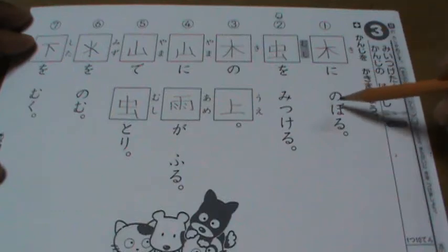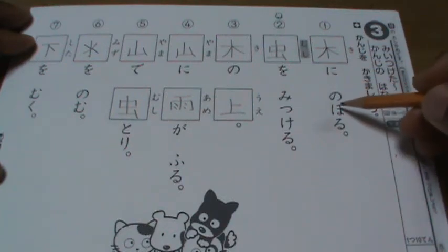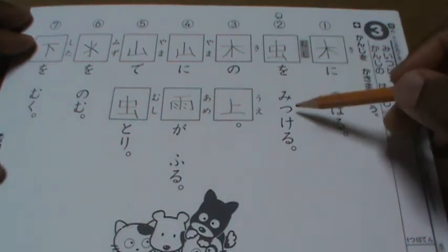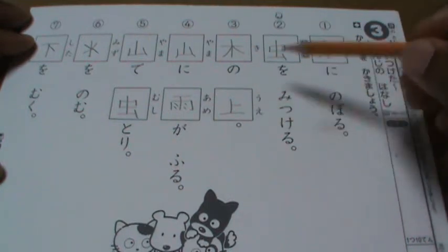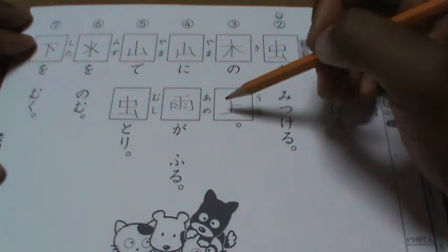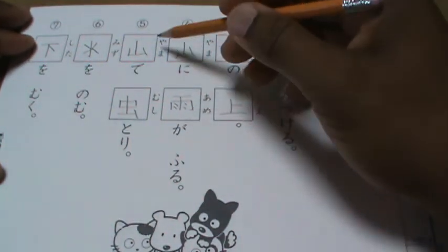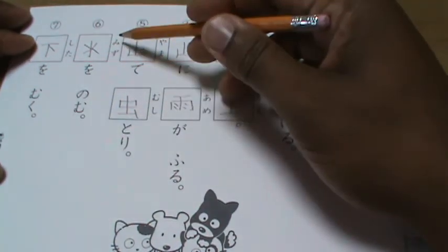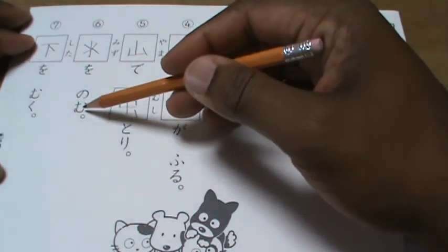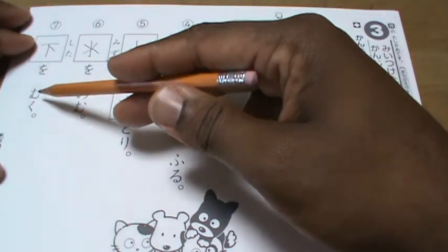So, ki ni noboru mushi o mitsukeru. Ki no ue. Yama ni ame ga furu. Yama de mushi tori. Mizu o nomu. Shita o muku.